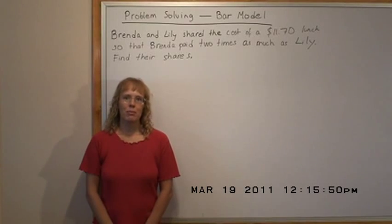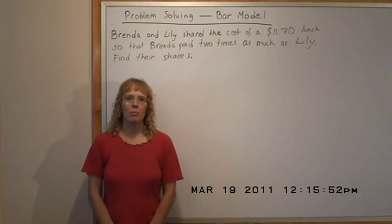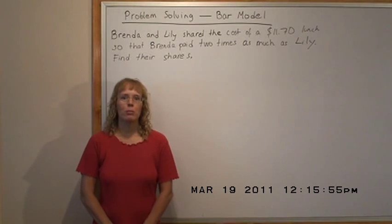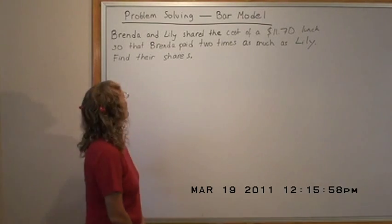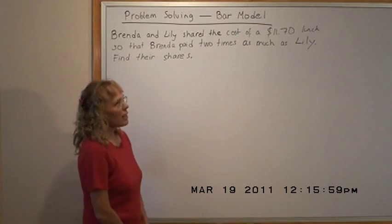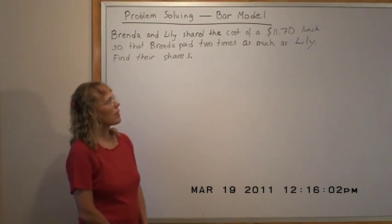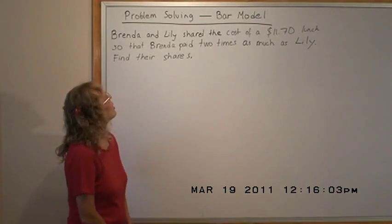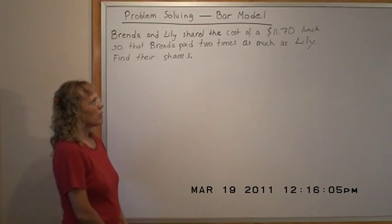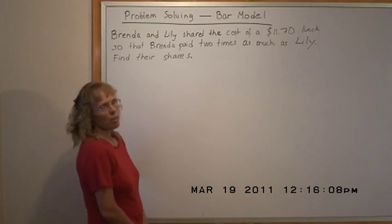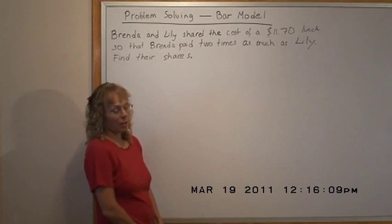Hello, my name is Maria Miller from MathMammoth.com. I want to solve in this video one word problem using the bar model. Brenda and Lily shared the cost of an $11.70 lunch so that Brenda paid two times as much as Lily to find their shares — so they're not sharing equally.